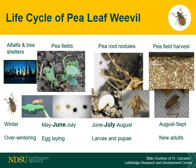Adult weevils overwinter in alfalfa and other perennial legumes, roadside ditches, and shelter belts. Adults emerge in the spring as temperatures rise above 55 to 63 degrees Fahrenheit and fly into spring-seeded field peas or fava beans. Adult pea leaf weevil feed on the leaves, causing a half-moon notched appearance along the leaf margin. Adults mate and females lay eggs singly near the soil surface near the developing host plant from May to June.